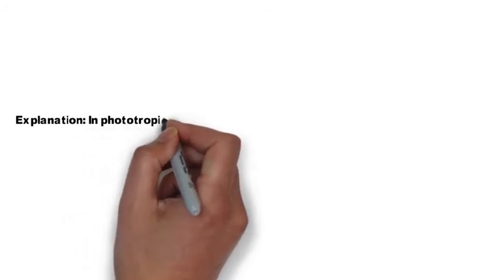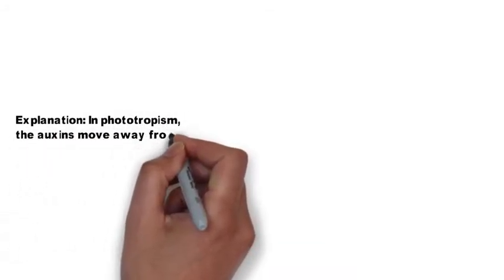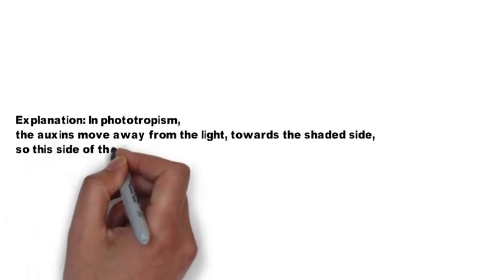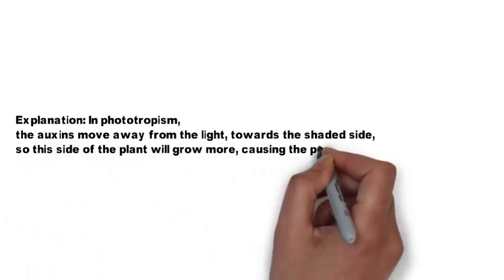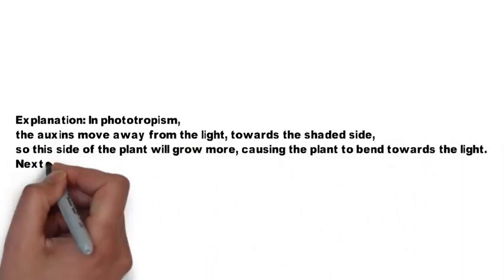Explanation. In phototropism the auxins move away from the light towards the shaded side so this side of the plant will grow more causing the plant to bend towards the light.